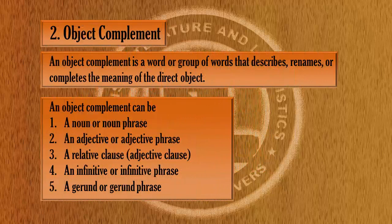Our next topic is object complement. An object complement is a word or a group of words that describes, renames, or completes the meaning of the direct object. An object complement can be a noun phrase, an adjective phrase, a relative clause or adjective clause, an infinitive phrase, or a gerund phrase.